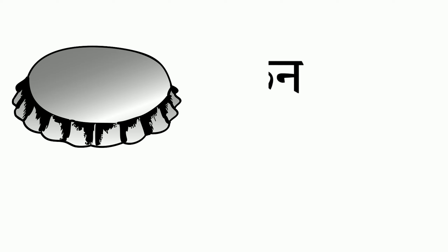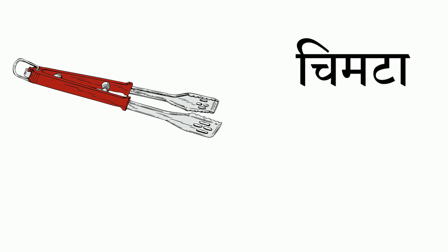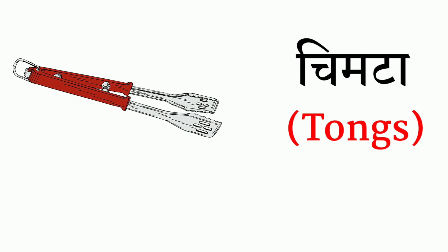Next we have dhakkan — that's called lid. Next we have chimta — that's called tongs.